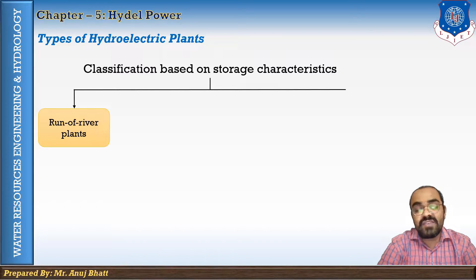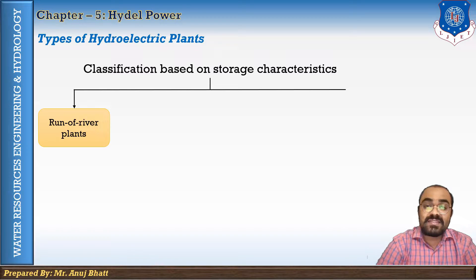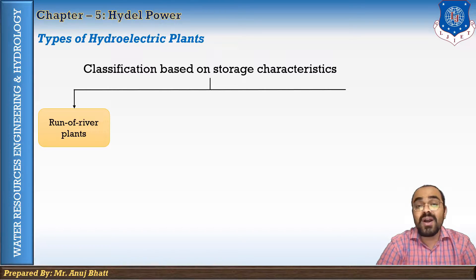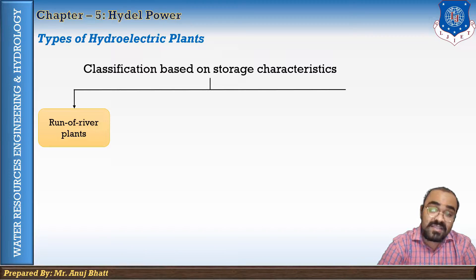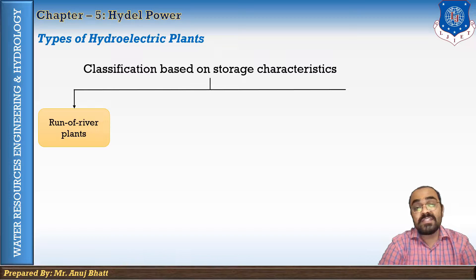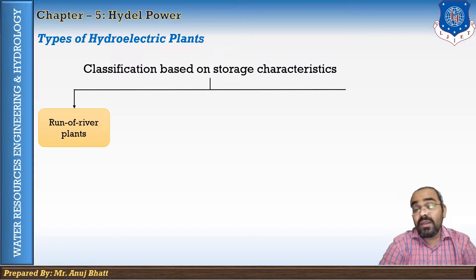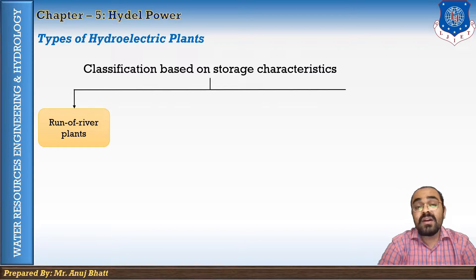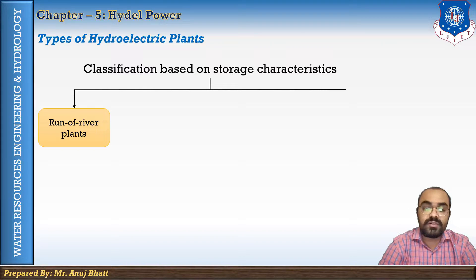Such a scheme is essentially a low-head scheme and is adopted in the case of a perennial river which has a minimum dry weather flow of such magnitude that makes development worthwhile. In such plants, sometimes the tailwater rises to a high level during floods, making plants inoperative. In some cases, small storage or pondage is provided for tiding over hourly fluctuation of load. When available flow exceeds demand, excess water can be stored temporarily in the pond upstream.